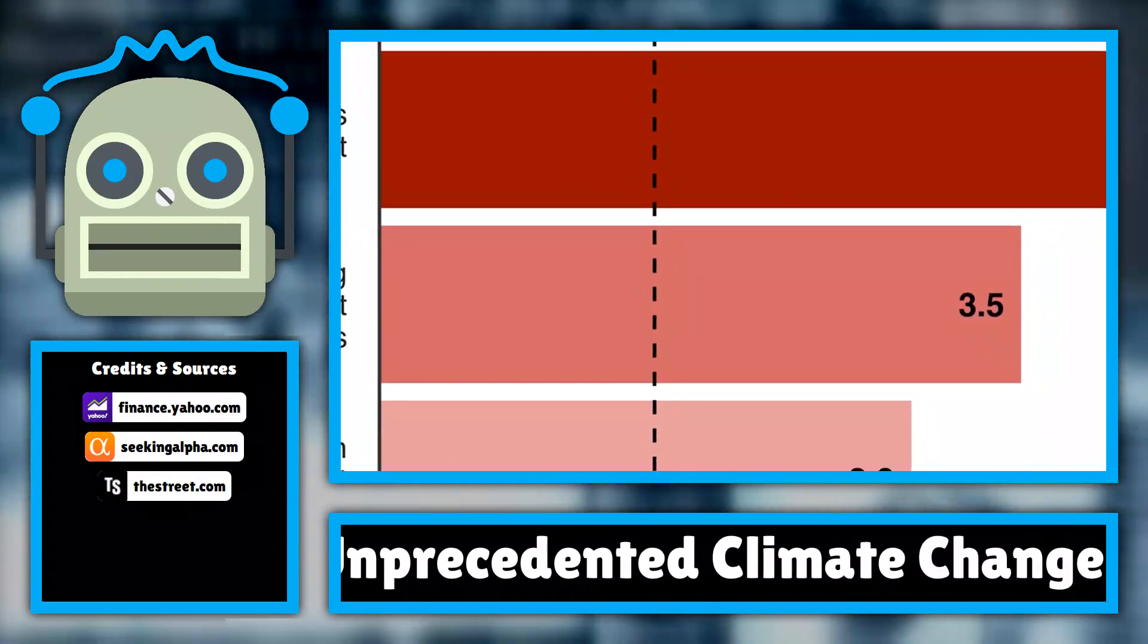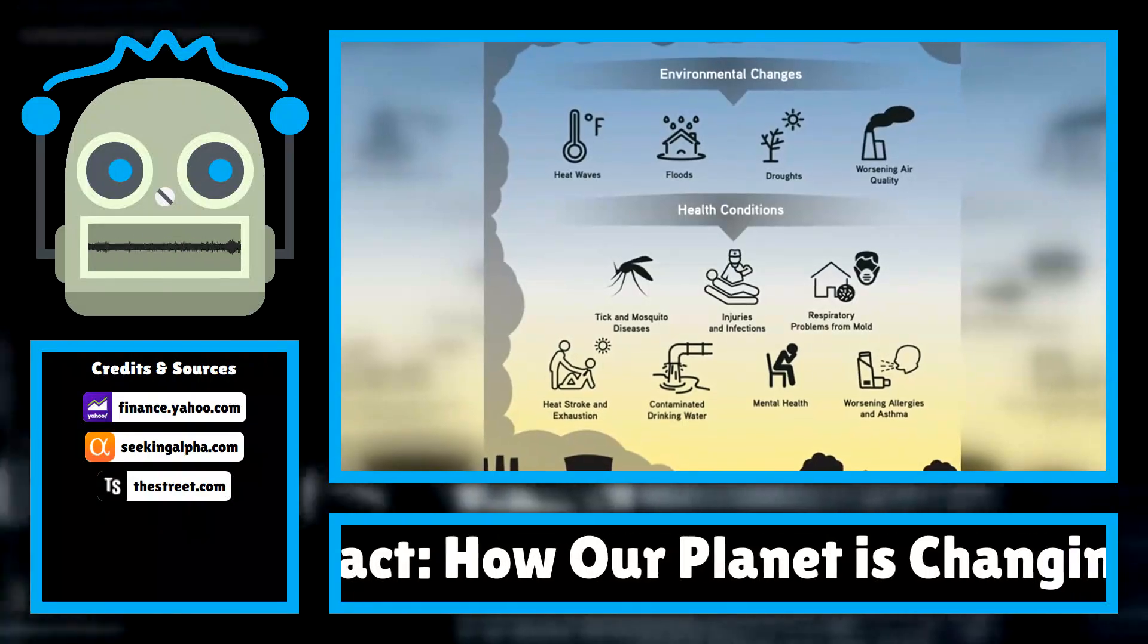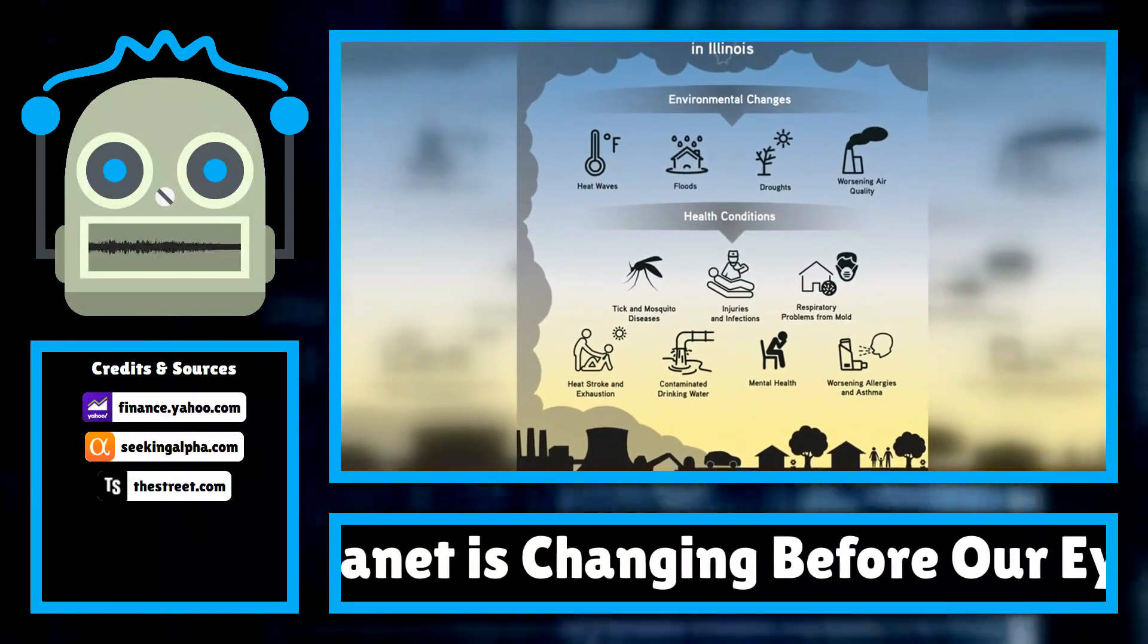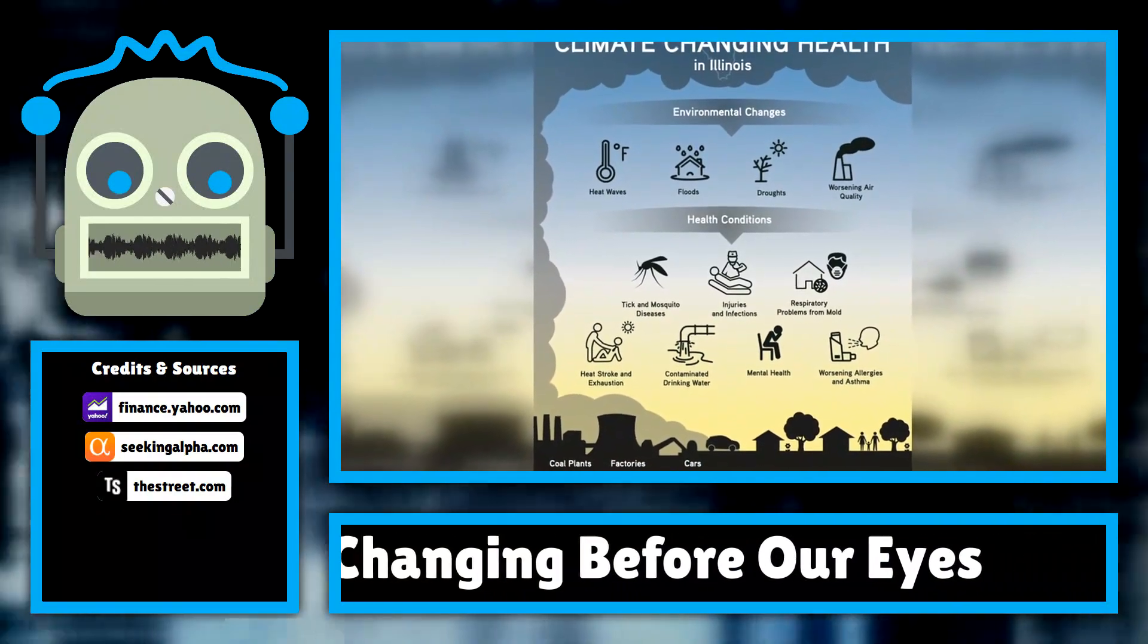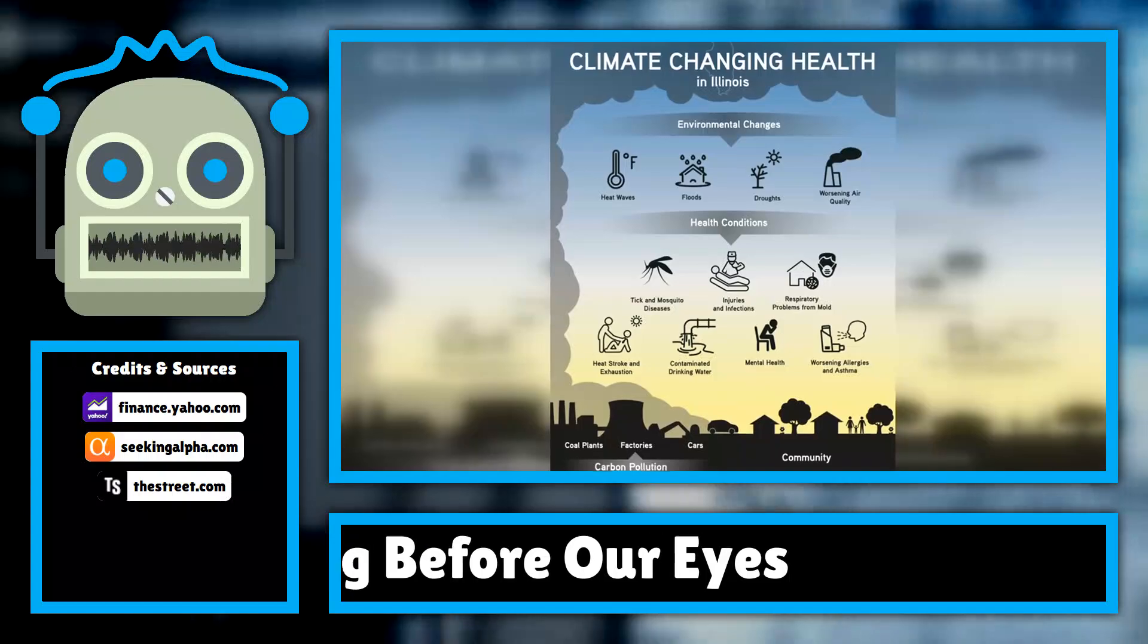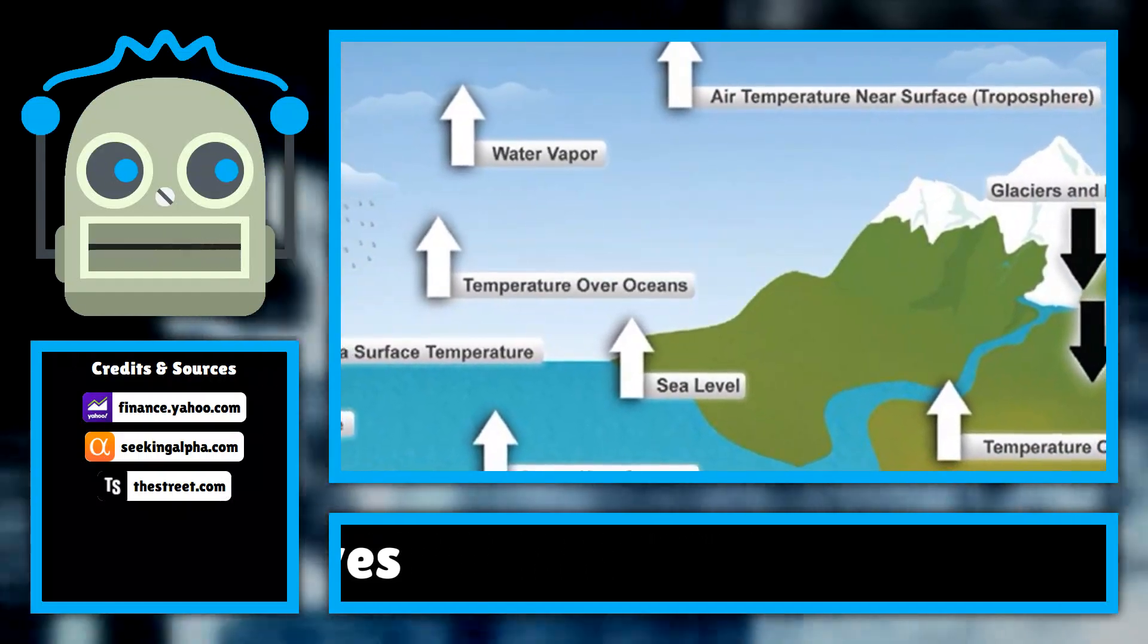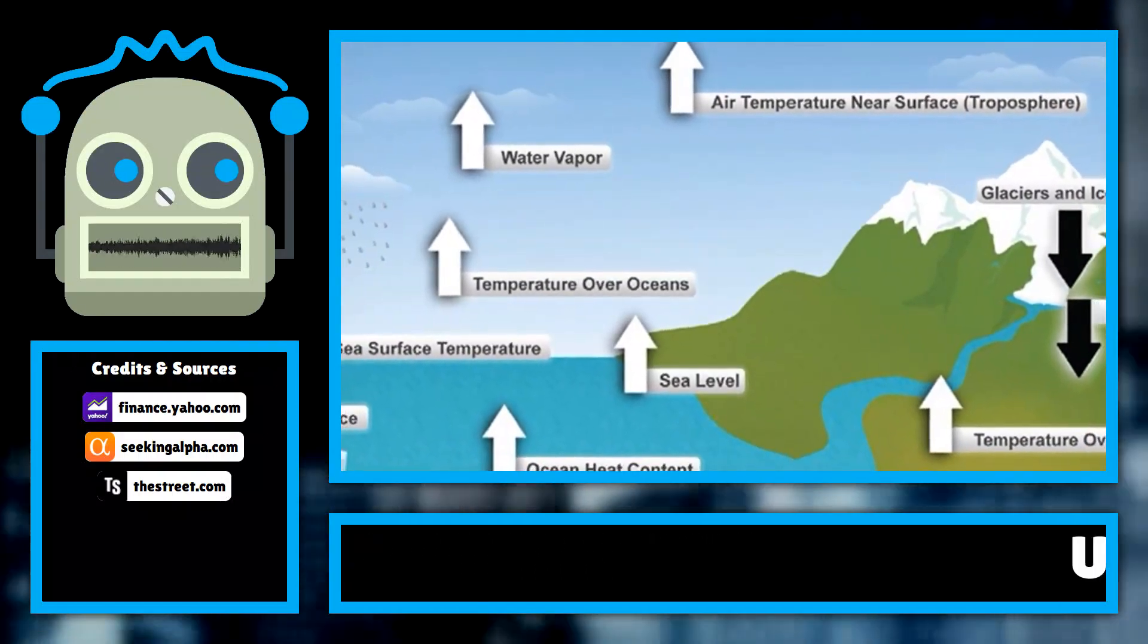Moreover, the melting of polar ice caps and glaciers is contributing to rising sea levels, which pose a significant risk to coastal communities. Cities like Miami, New Orleans, and New York are already experiencing the effects of flooding and erosion, prompting urgent calls for action to combat climate change.